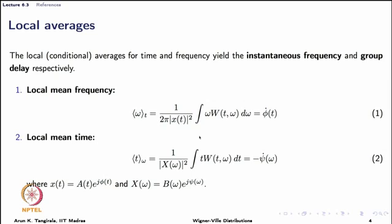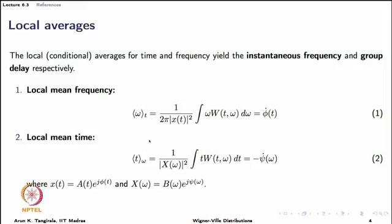The marginal is 2π times |x(t)|². This 2π again appears because of the angular frequency, and then the first moment of the conditional density will give me the average frequency at that particular time t. And it turns out when you substitute for the x(t) and x(ω), using the standard complex representations, you will end up with φ̇(t), which is nothing but your instantaneous frequency. Likewise, for the local mean time, remember the definition of group delay is the average time spent by a frequency component of frequency ω. So once again, the same arguments here: I have to locally evaluate the average time at a given frequency, use the definition. Here, the 2π does not appear and I end up with the group delay where I have ψ̇(ω) unlike φ̇(t).